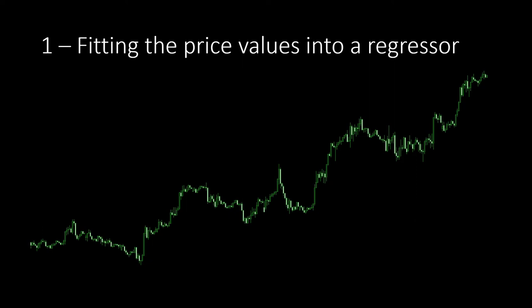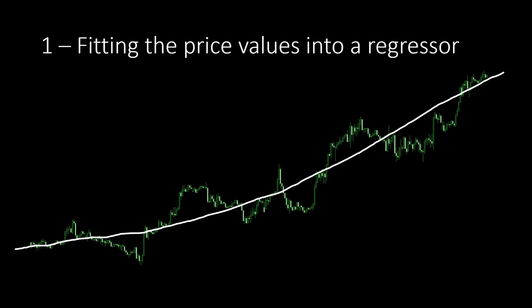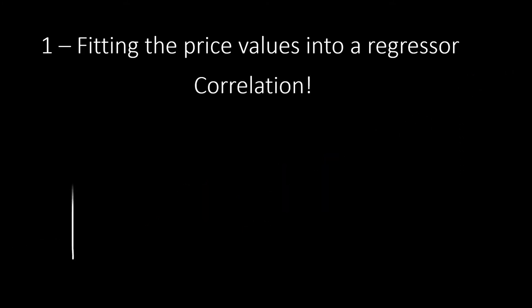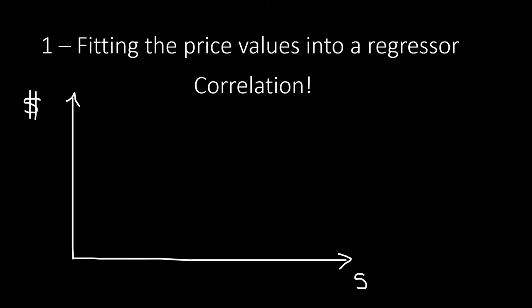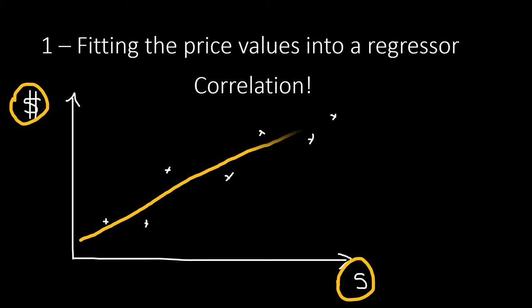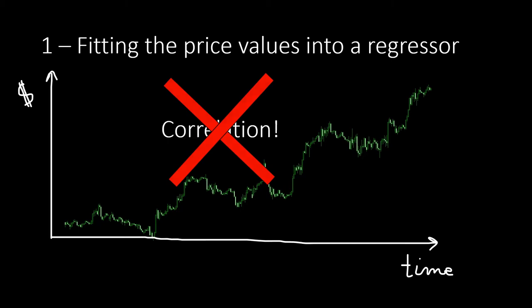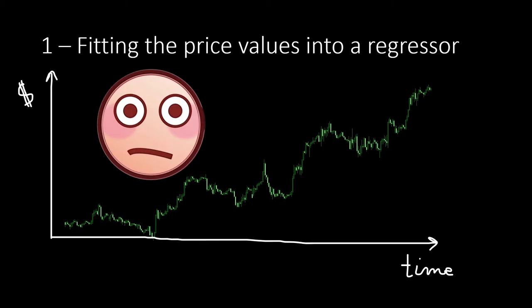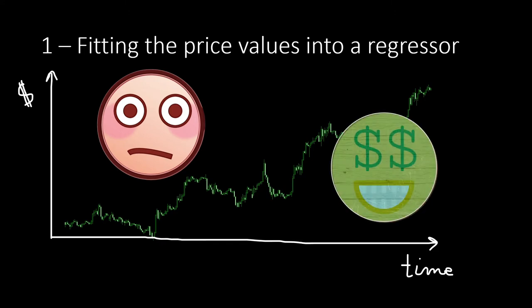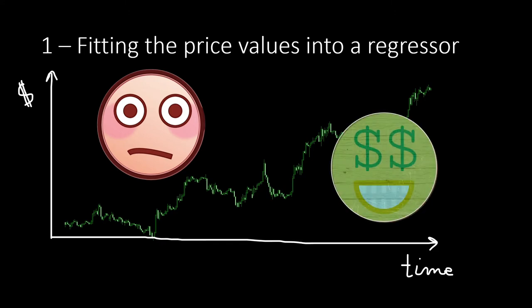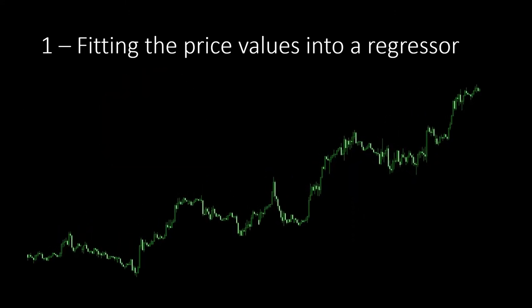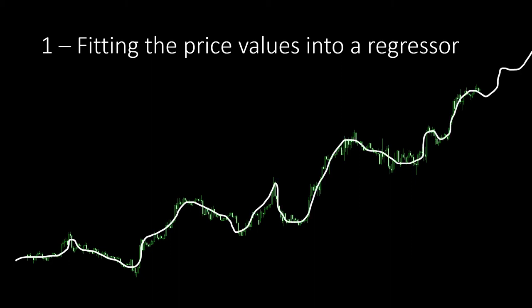The first beginner's mistake is fitting price values into a machine learning model using a regressor. Trying to predict the next market value doesn't work this way. This method gives excellent results for values naturally correlated with measurables — for example, predicting house prices from surface area. However, there is no clear correlation between stock or currency markets and the time variable. Surprisingly, many articles positively advertise this method. If you overfit your regressor to price values, you'll get a satisfying fit curve, but this is the worst use of machine learning and will definitely destroy your account.